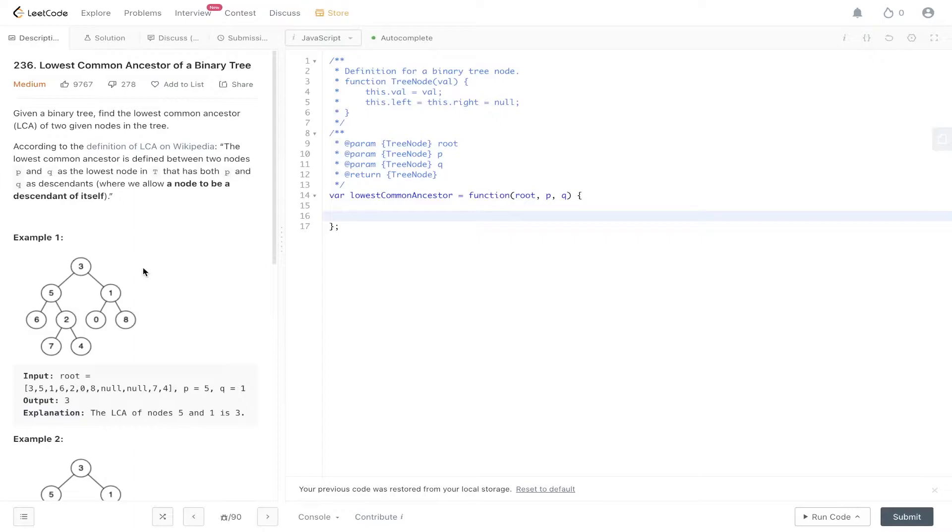Given a binary tree, find the lowest common ancestor of two given nodes in the tree. According to the definition on Wikipedia, the lowest common ancestor is defined between two nodes P and Q as the lowest node in T that has both P and Q as descendants, where we allow a node to be a descendant of itself.